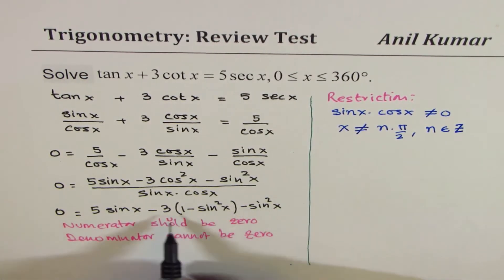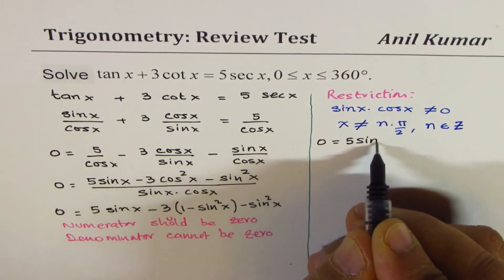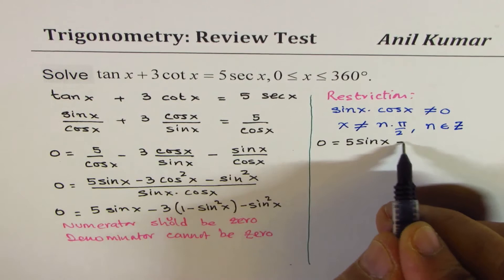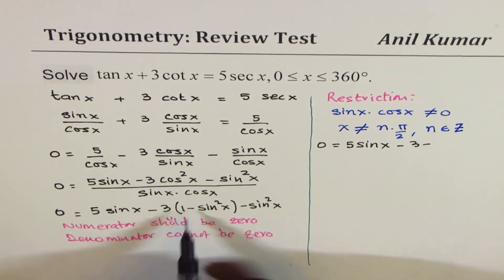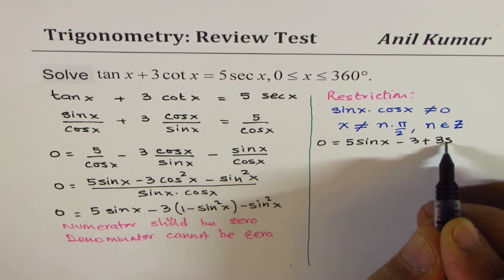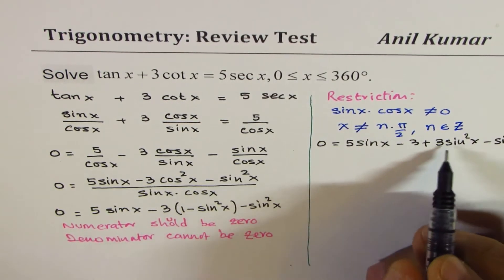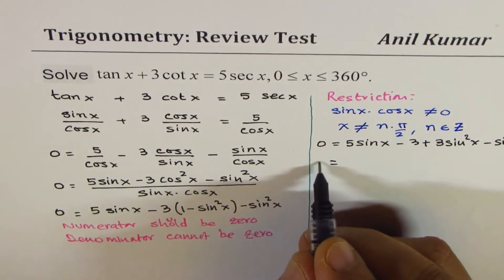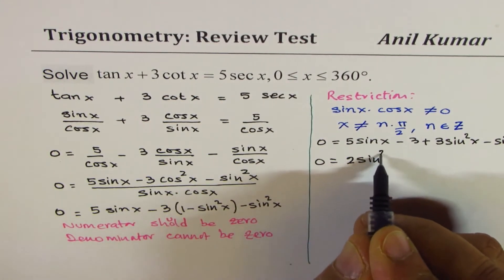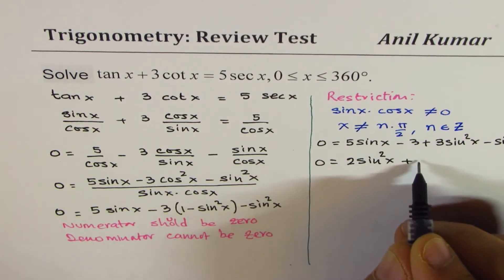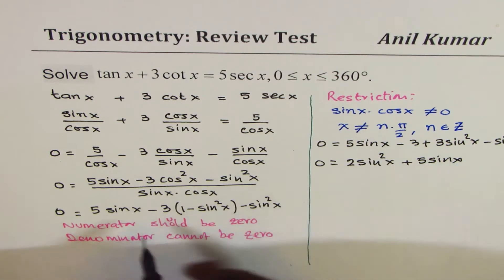So what we are saying here is, let me open this bracket, so what we get here is 0 equals to 5 sine x minus 3 minus, so minus minus becomes plus, 3 sine square x minus sine square x. So when you combine the terms and arrange, 3 sine square x minus sine square x will give you 2 sine square x. We have plus 5 sine x and minus 3.